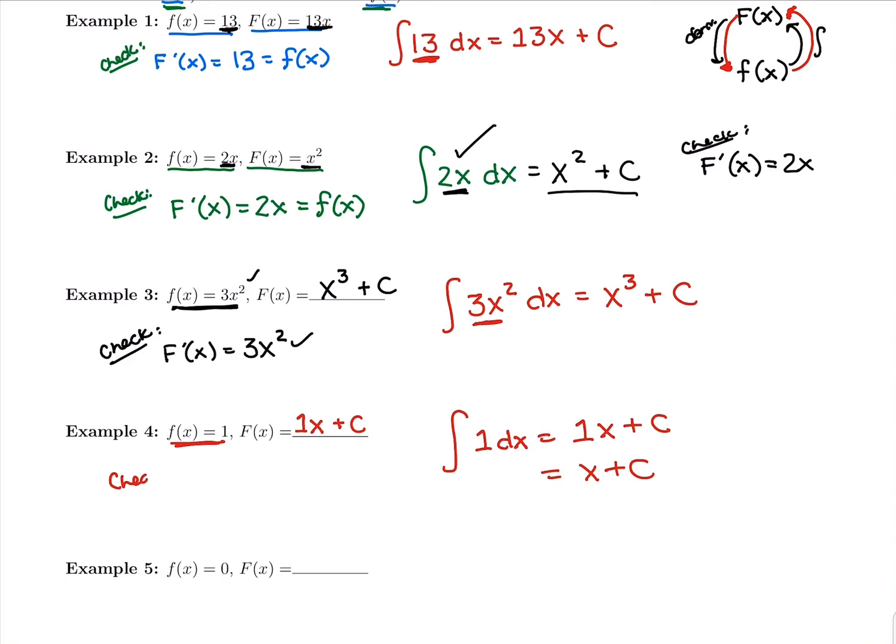If you're unsure of your antiderivative, you can always check it by taking the derivative of it. So we would take capital F prime of x. The derivative of 1x is 1. The derivative of c, a constant, is 0. So yes, we get back to exactly where we started, what was in the integrand.